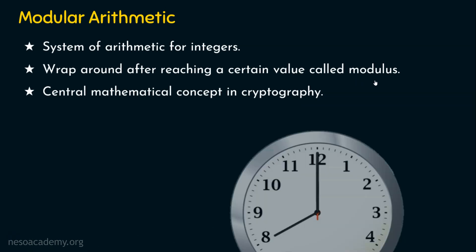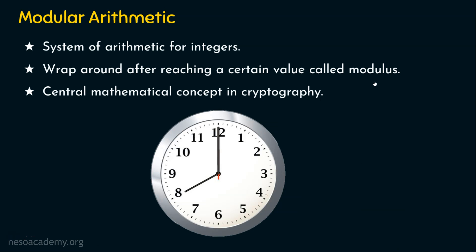Let's understand Modular Arithmetic with a clock example. We have 24 hours a day, but our clock has only 12 numbers. Still, we can represent 24-hour timing with just 12 numbers. If the time is 15 hours, it means 3 PM. If 20 hours, it's 8 PM. If 23 hours, it's 11 PM. We wrap around every 12 hours, so 12 is the Modulus here.